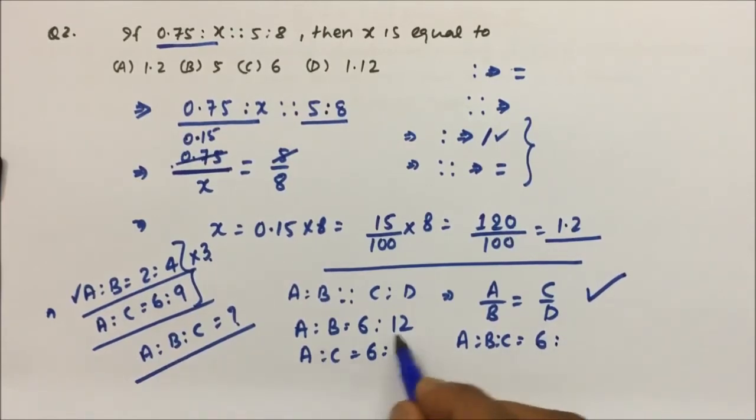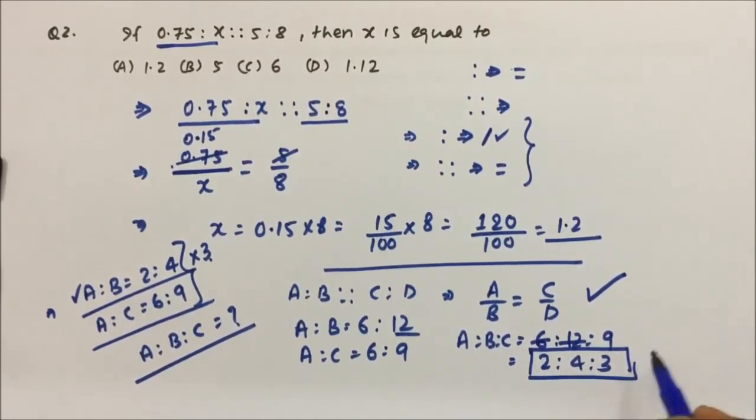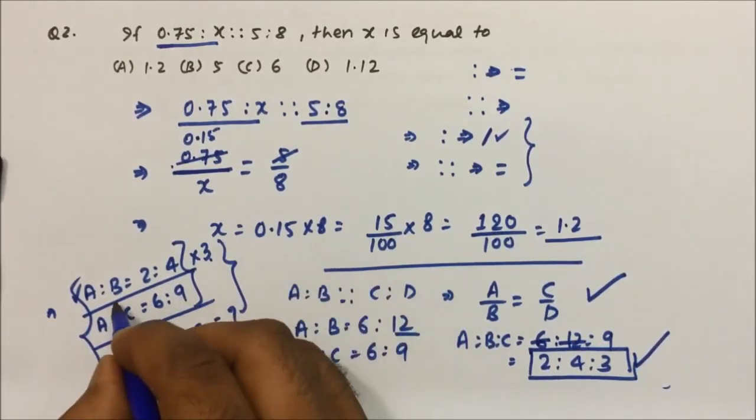6 to B is 12, and then 9. That will be 3 into 2, 3 into 4, and 3 into 3, which equals 2 to 4 to 3. So for ratio problems, the only thing to keep in mind is we have to equate the value whichever is common.